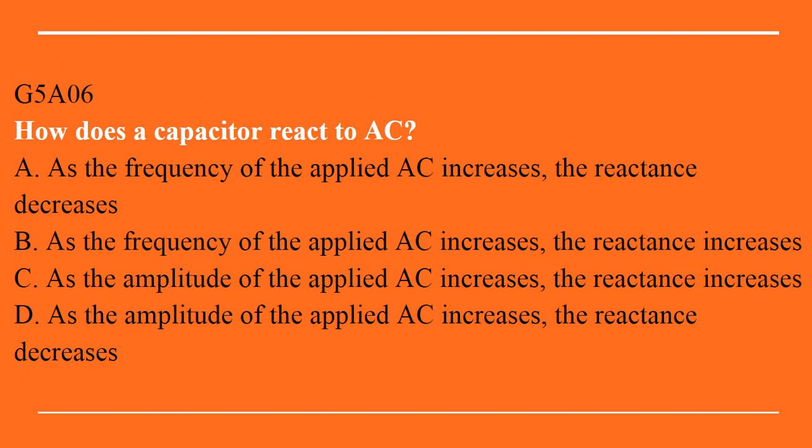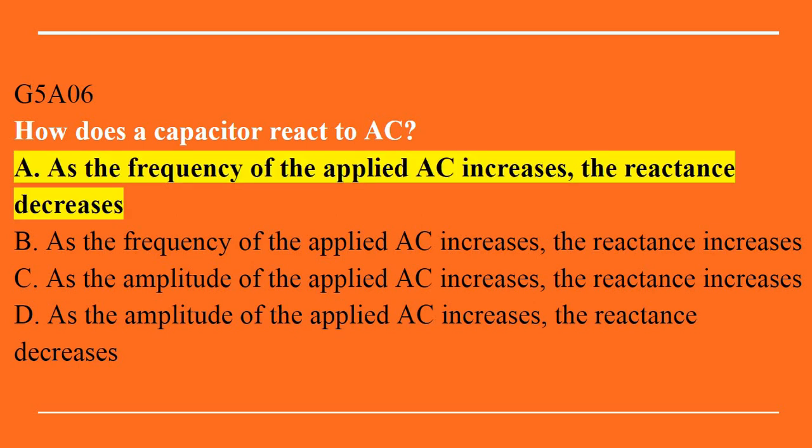G5A06: how does a capacitor react to AC? A. As the frequency of the applied AC increases, the reactance decreases. B. As the frequency of the applied AC increases, the reactance increases. C. As the amplitude of the applied AC increases, the reactance increases. Or D. As the amplitude of the applied AC increases, the reactance decreases. Answer is A: as the frequency of the applied AC increases, the reactance decreases.